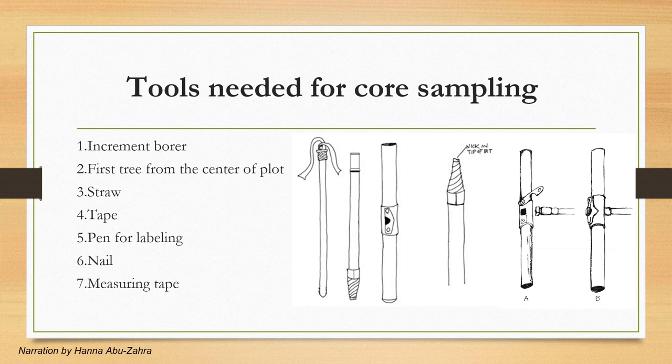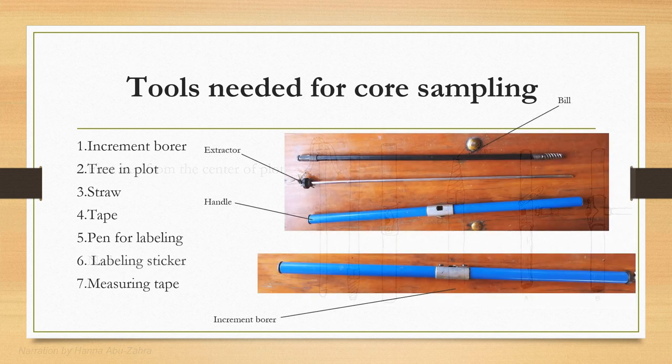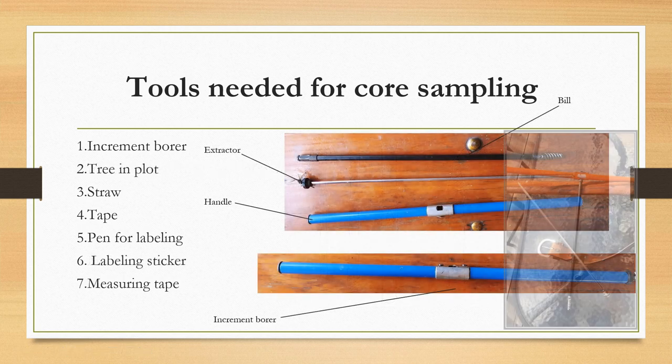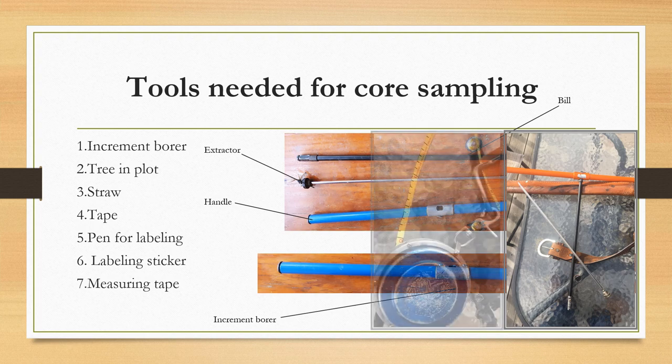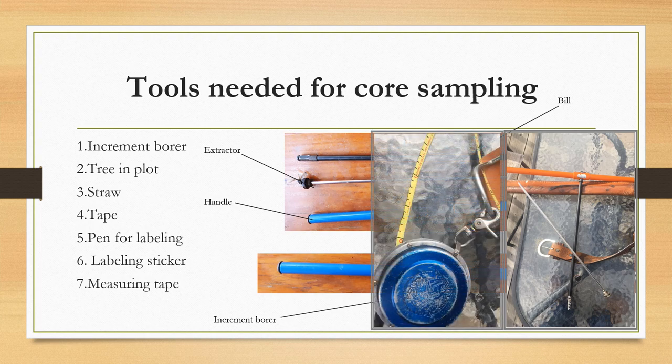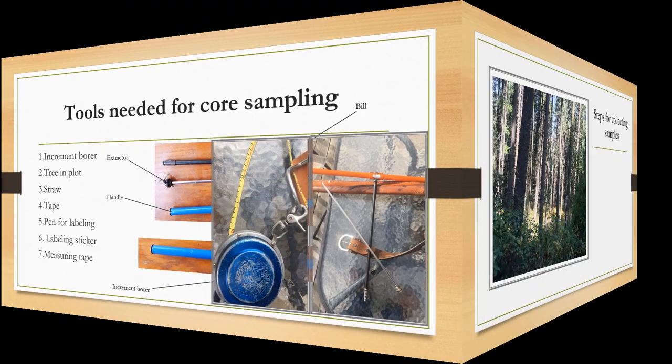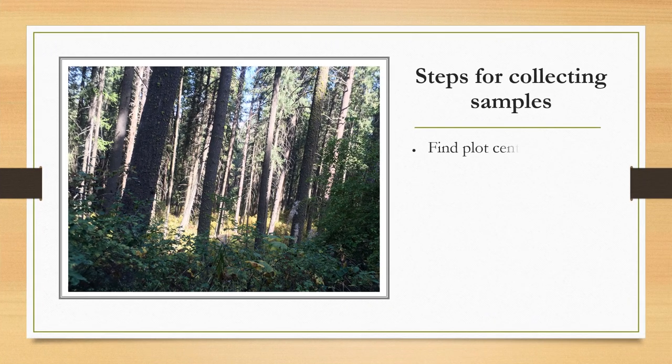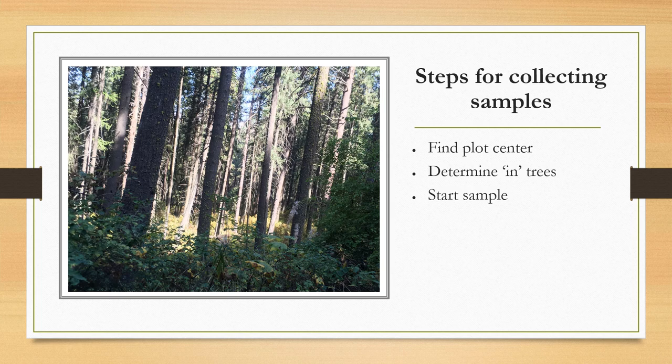The tools that you will need in order to take the tree core samples are an increment borer, labeling sticker, straw to store the samples in, pen to label the sample for your group, tape, and a measuring tape. After gathering your tools and getting to your site, the first thing you do is mark the sun over plot, then find the first tree that is within the radius of your plot.